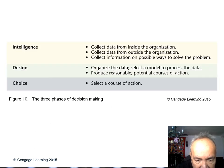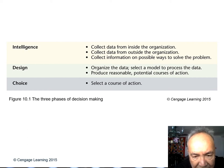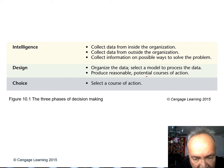In the intelligence phase, you collect data from inside and outside the organization and gather information on possible ways to solve the problem. In the design phase, you organize the data, select a model to process it, and produce reasonable potential actions. In the choice phase, you select one course of action — you have made the decision.